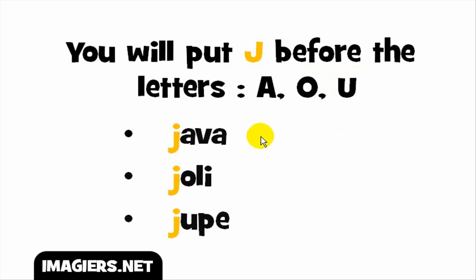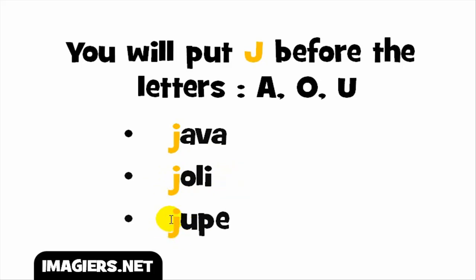I've chosen words that start with G, but it doesn't matter — it could be in the middle of a word, as long as G is before these vowels A, O, U. So G + A gives the sound JA, and the full word is JAVA. G + O gives JOLI. And G + U gives the sound JU, as in JUPE — remember you don't really stress the final sound.